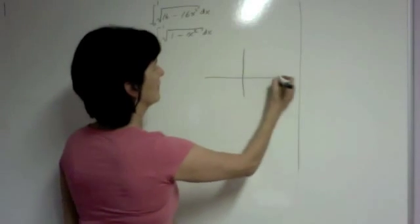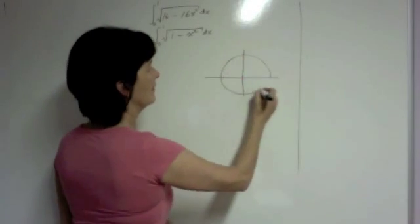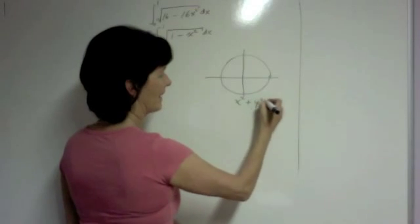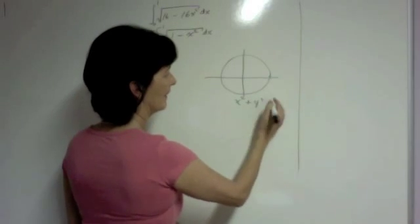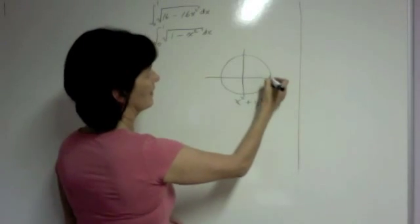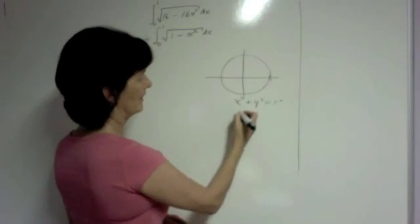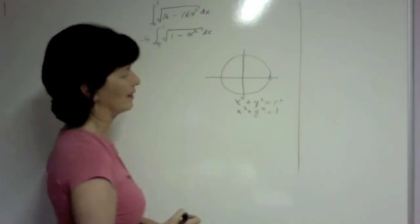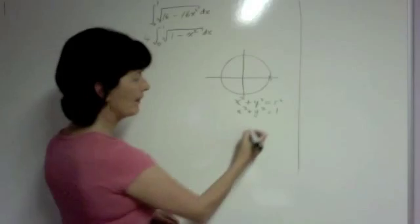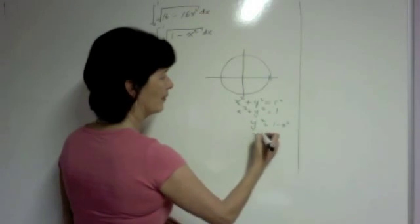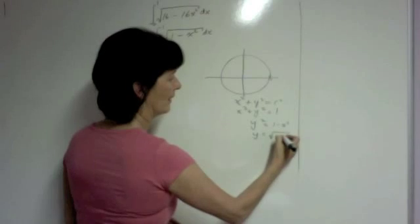So if we take a circle, centre 0, 0, our equation is x squared plus y squared equals r squared. And if we take it as a unit circle with a radius of length 1, then obviously it's x squared plus y squared equals 1. That would make y squared equals 1 minus x squared and y would equal the square root of 1 minus x squared.